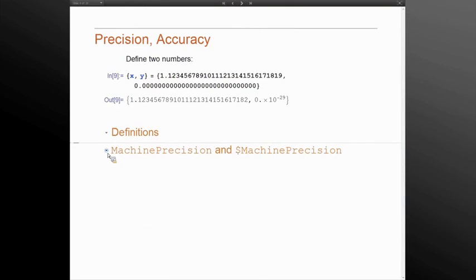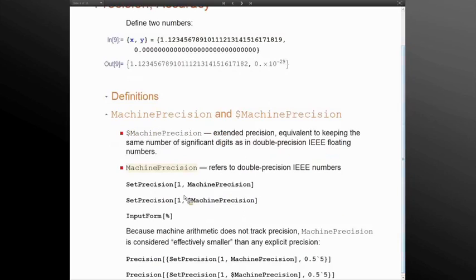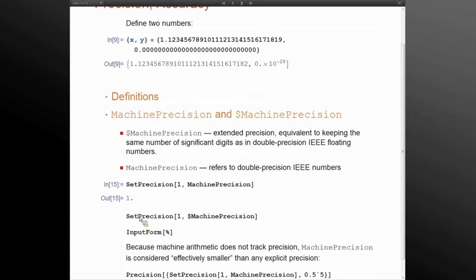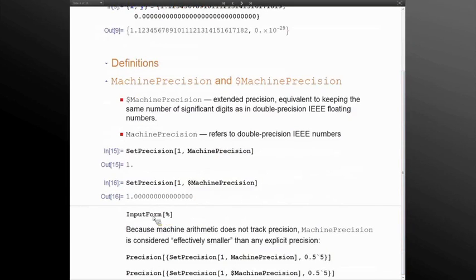I need to bring up a notion of two special precisions in Mathematica. Dollar machine precision is an extended precision such that there are exactly 53 binary digits in it. It's basically an extended precision equivalent of a double precision IEEE number. Simple machine precision refers to that double precision number.